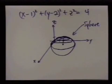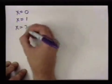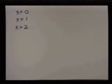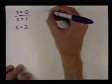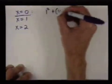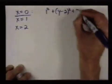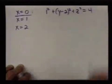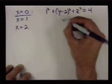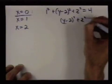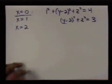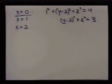So another way you could try to do this problem is to set x equal to a bunch of different values. So you could see what happens when x is 0, x is 1, x is 2, and so forth. So in this case, what do we get? We get 1 squared plus y minus 2 squared plus z squared equals 4. So we get y minus 2 squared plus z squared equals 3.